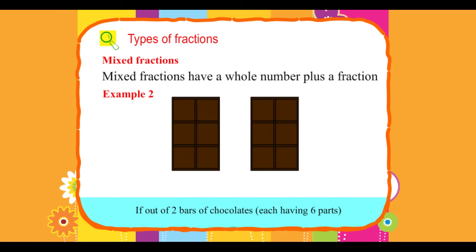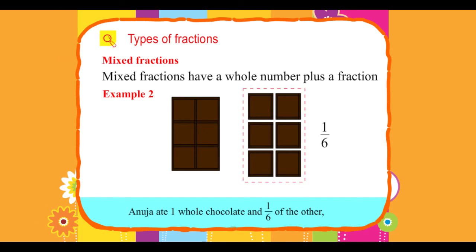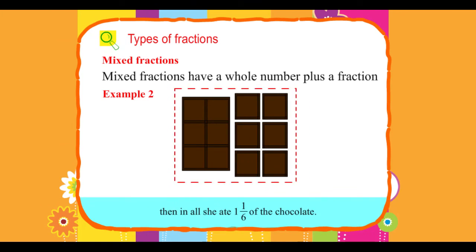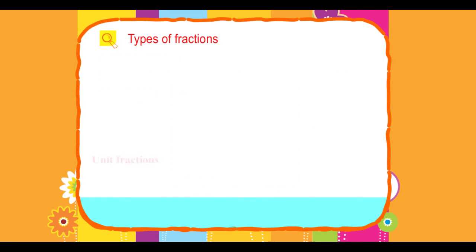Example: If out of 2 bars of chocolate, each having 6 parts, Anuja ate 1 whole chocolate and 1 upon 6 of the other, then in all she ate 1 and 1 upon 6 of the chocolate.